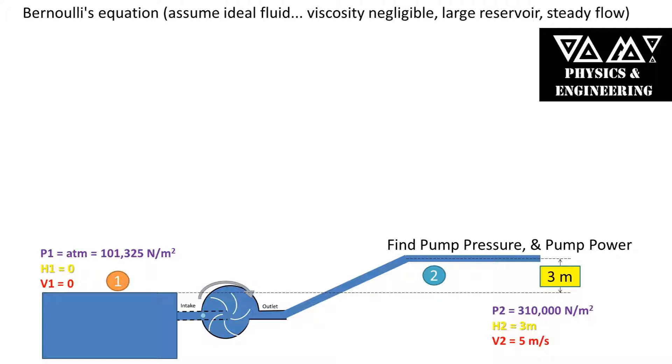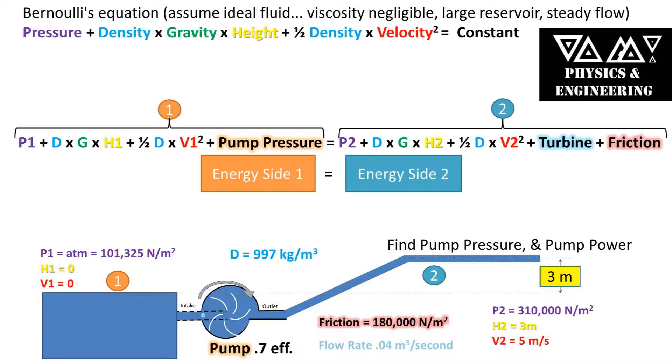In this problem we will be using a value for friction of 180 kilopascals, a flow rate of 0.04 meters cubed per second, and a pump efficiency of 0.7. We will be assuming the density of water is 997 kilograms per meter cubed. We want to find the pump pressure needed and the pump power in watts, both with perfect efficiency and a 0.7 efficiency.